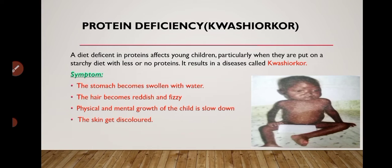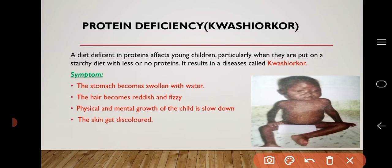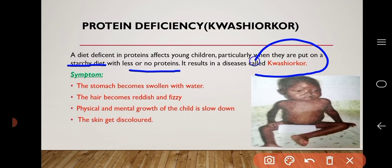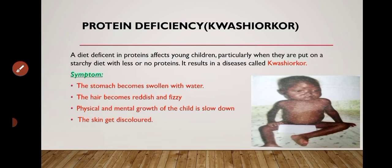Protein deficiency causes a disease called kwashiorkor. A diet deficient in protein affects young children particularly — they are put on a starchy diet with less or no protein, resulting in kwashiorkor. Symptoms are: the stomach becomes swollen with water, the hair becomes reddish and frizzy, physical and mental growth of the child is slowed down, and the skin gets discolored.